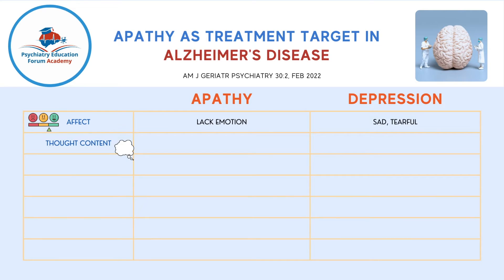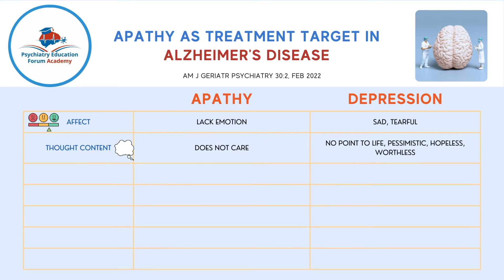Second is thought content. In apathy, a person does not care about what's happening or how they are feeling, so mostly family members will bring this to our attention. But in depression, the person will bring it up themselves — there is no point in living, pessimism, hopelessness, worthlessness. These are very typical for depression.